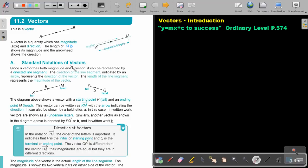Standard Notations of Vectors. Since a vector has both magnitude and direction, it can be represented by a directed line segment. The direction of the line segment, indicated by an arrow, represents the direction of the vector. The length of the line segment represents the magnitude of the vector. So this is from K, so that's the tail, to M, the head, with the arrow indicating it's going from K to M.